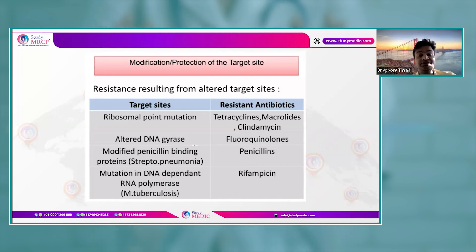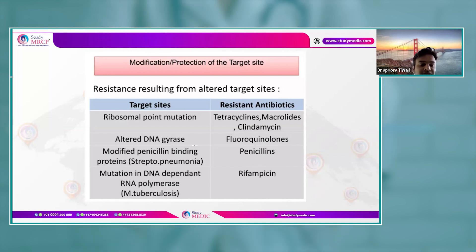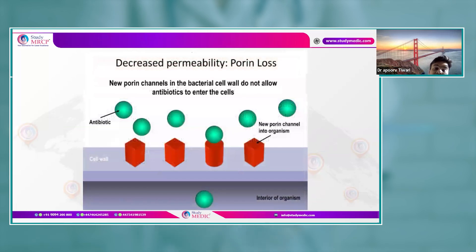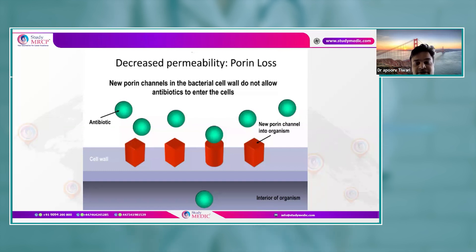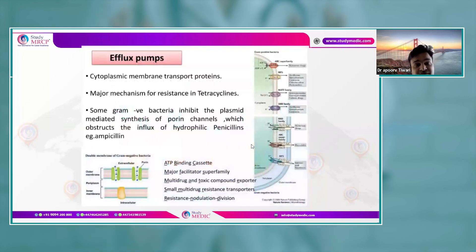Modified penicillin-binding proteins in Streptococcus pneumoniae result in penicillin resistance. Mutation in the DNA-dependent RNA polymerase leads to rifampicin resistance. Reduced permeability is another mechanism: new porin channels in the bacterial cell wall do not allow antibiotics to enter. Some gram-negative bacteria also inhibit plasma-mediated synthesis of porin channels, obstructing influx of hydrophilic antibiotics like ampicillin.